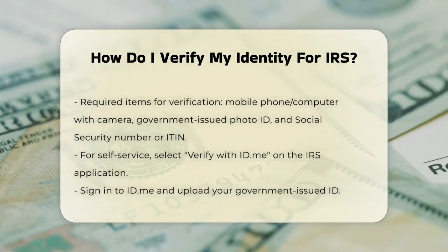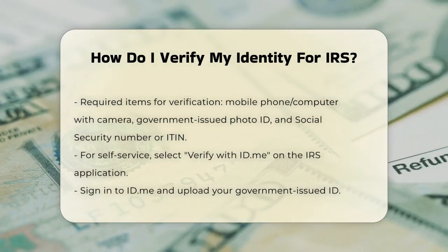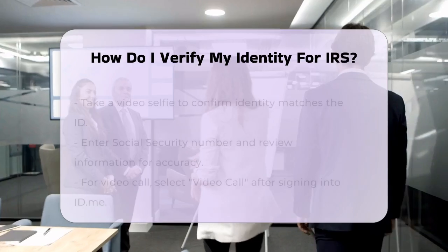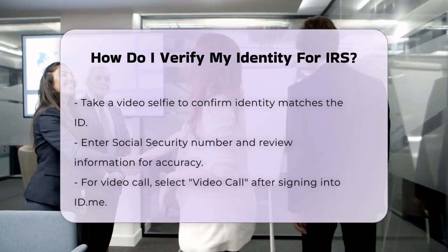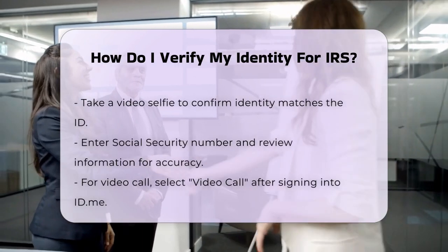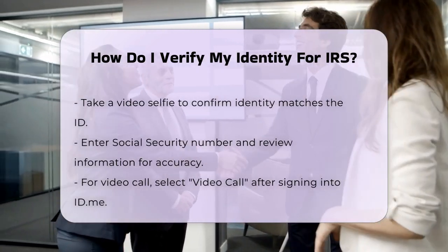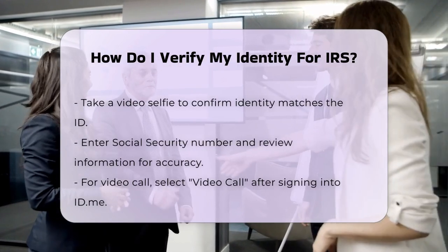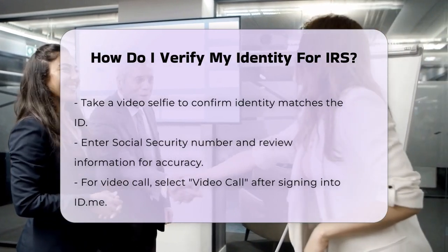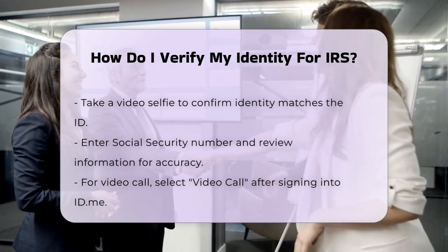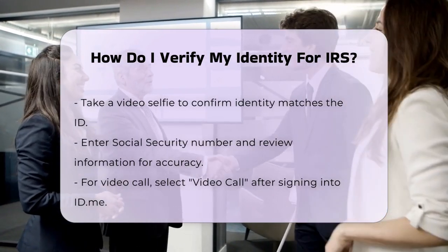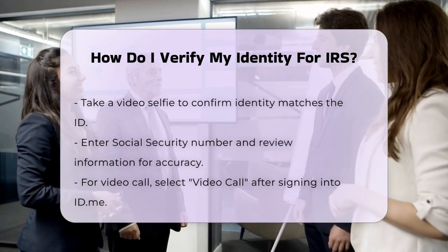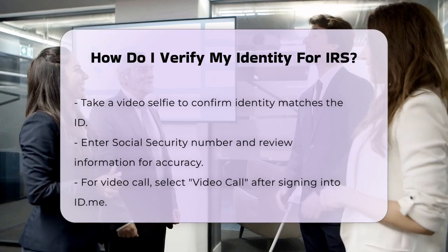If you choose the self-service option, go to the IRS application you want to access and select 'Verify with ID.me.' Sign in to your ID.me account and follow the prompts to upload your government-issued ID. You'll also need to take a video selfie to confirm that the person in the selfie matches your ID. Then enter your Social Security number and review the information to ensure it's accurate.